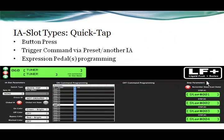Quick tap is essentially the ability to send one stream of commands as quickly as possible. When this IA slot is triggered in an on state, it runs through the on commands immediately and exits. In this example, a guitar tuner special function is programmed, triggering CC number 15 on the external device to turn it on. The IA slot will always be in the on state for a quick tap.